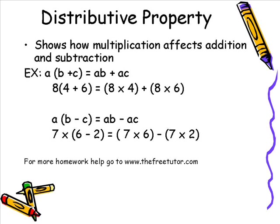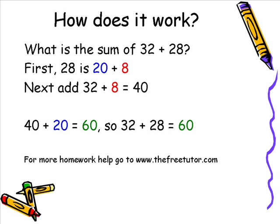Now I want to show you how these properties can work for us. Mainly, as we become familiar with them, they help us improve our ability to do mental math. For example, say we want to find the sum of 32 plus 28. We know 28 is 20 plus 8, so we change the grouping. We add 8 to 32 to get 40, then add 40 plus 20 to get 60. So 32 plus 28 equals 60. This uses both the commutative and associative properties of addition to solve a problem quickly.